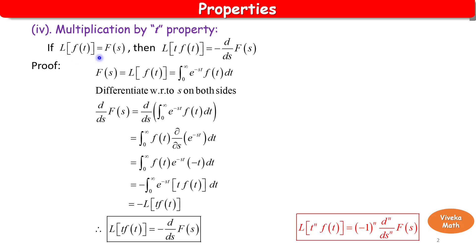Statement: if L of f(t) is equal to F(s), then L of t into f(t) is equal to minus d by ds of F(s). The standard notation is L of f(t) equals F(s), where f(t) is replaced by t multiplied by f(t), and the answer carries the negative sign.